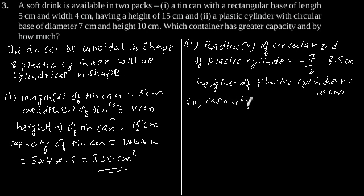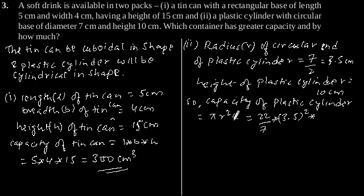So, the capacity of plastic cylinder is equal to π R² H. Putting the value of R and H we will get 22 by 7, R is 3.5 to the power 2 into H, so H is 10. This is equal to 11 into 35 which is equal to 385 cm³.